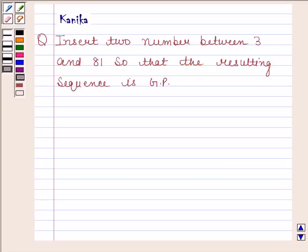Hi and welcome to the session. Let us discuss the following question. The question says insert two numbers between 3 and 81 so that the resulting sequence is a GP. Let us now begin with the solution.